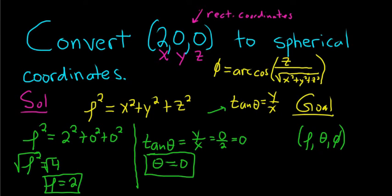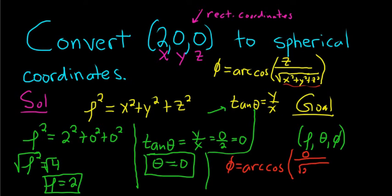To find phi, we use this other formula. We have phi equals arc cosine of z, so z is 0 over all of this stuff here. This is just rho, but I'll write it out. It's 2 squared,